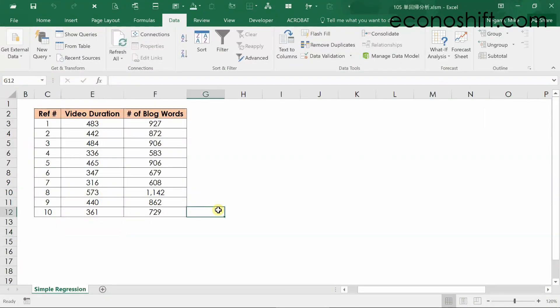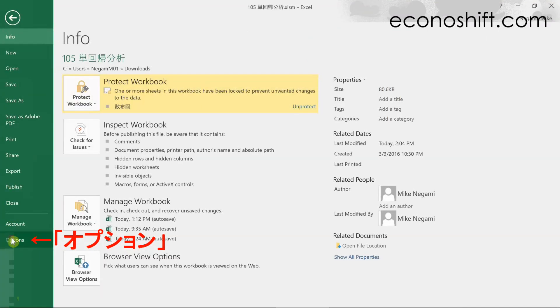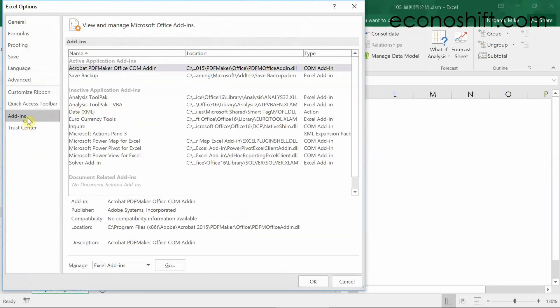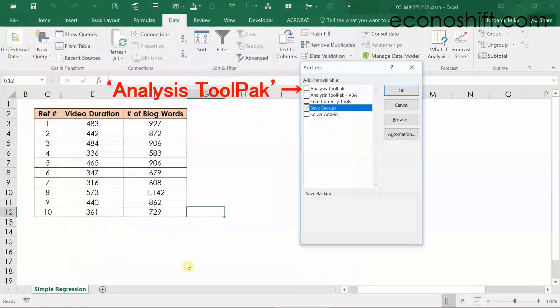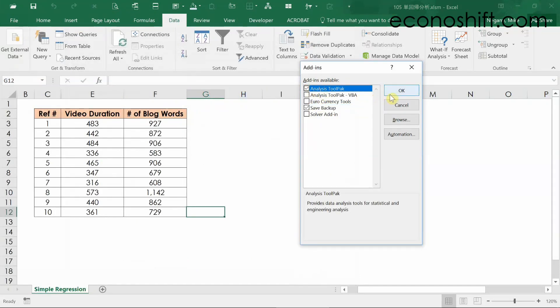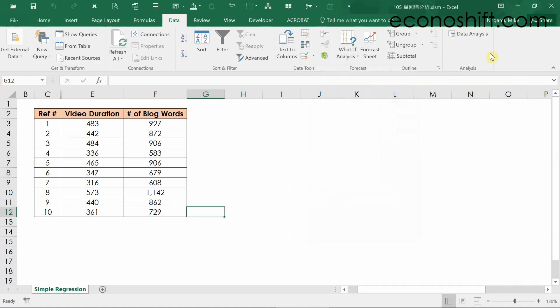If you don't see data analysis tools in the data ribbon, click file, options, and add-ins. After making sure that there is Excel add-ins here, click go. Check analysis tool pack, and click OK. Then it'll show up.